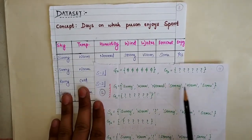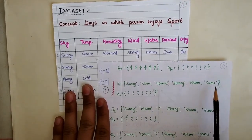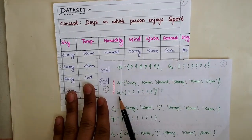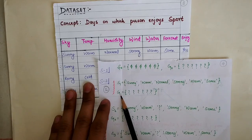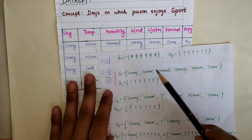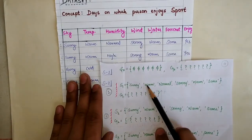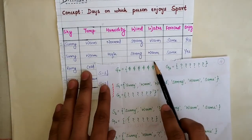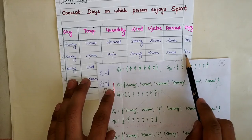For the first example, the most specific hypothesis becomes: sunny, warm, normal, strong, warm, same. The general hypothesis remains the same.